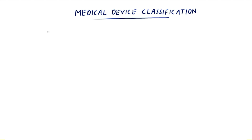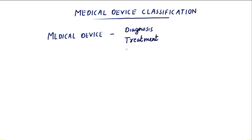So what is a medical device? A medical device is a device which is used for diagnosis, treatment, or prevention of disease or any other conditions in man or animals, or it can be a device which is intended to affect the structure or any function of the body of man or animals.